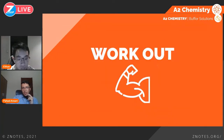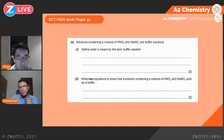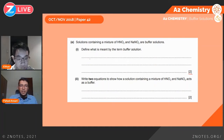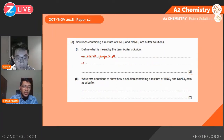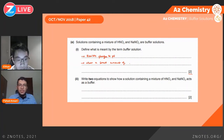So this was the deep dive. For the workout, first question: define what is meant by the term buffer solution. This question comes up a lot and is usually worth two marks on paper four. The two points you need to mention are: first, this solution basically resists changes to pH; second, when a small amount of acid or base is added. Remember, if you add too much acid or base, even the buffer solution can't resist the change in pH — it only works with small amounts.